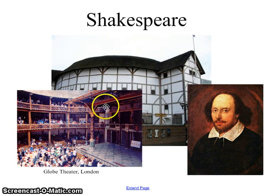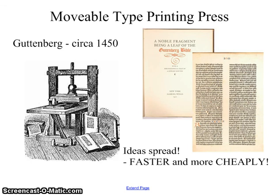Another major feature is something called the movable type printing press, created by a man named Gutenberg. This is a huge development. Before this time, monks would write everything out longhand. Now you can set all the type, put ink down, put your paper on top, and print the same page again and again — so much easier than before.